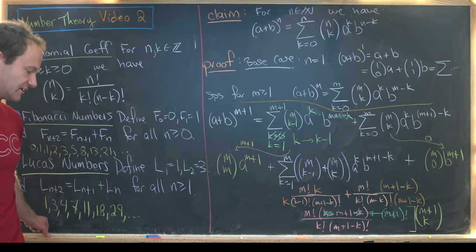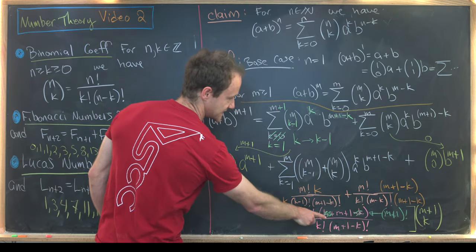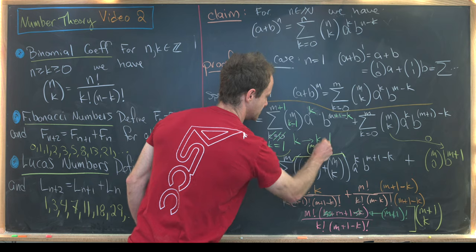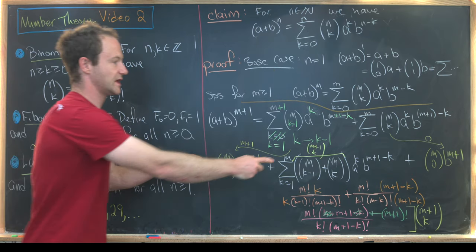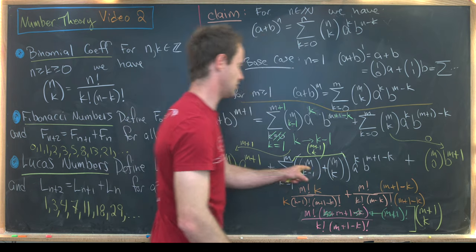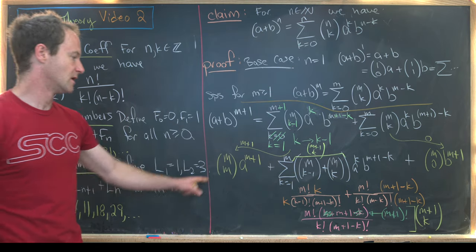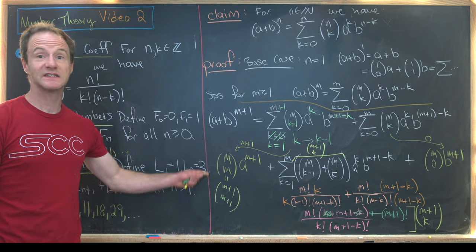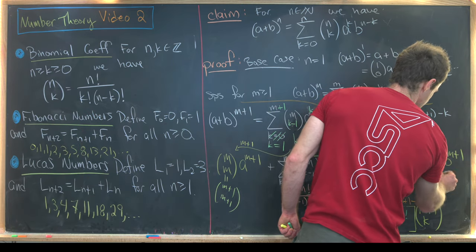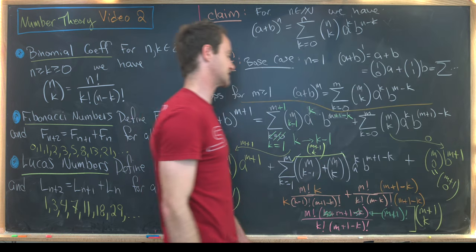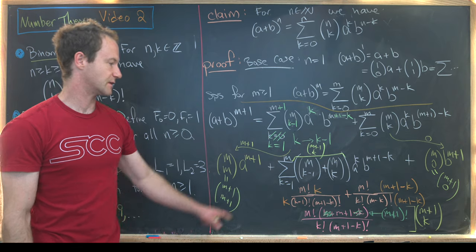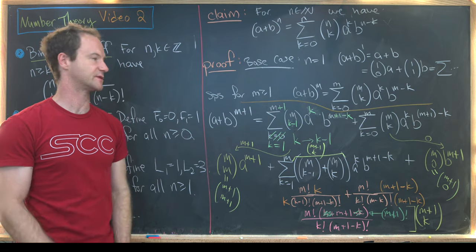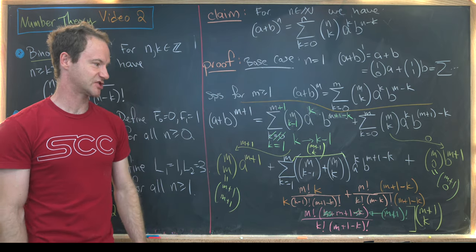We've shown the middle sum simplifies to m plus 1 choose k. Since m choose m equals m plus 1 choose m plus 1, and m choose 0 equals m plus 1 choose 0 (both equal 1), we can absorb those endpoint terms back into the sum. The result has the same form as the target with n replaced by m plus 1, finishing the proof by induction.